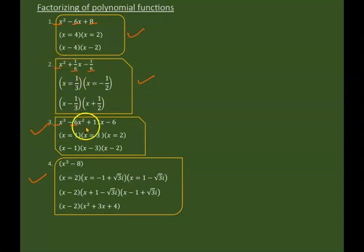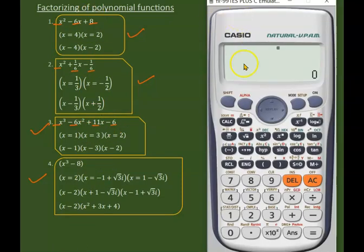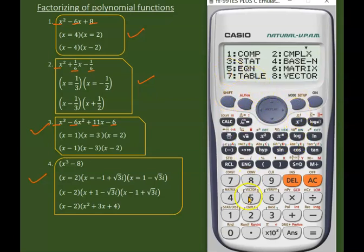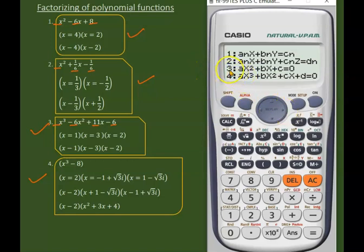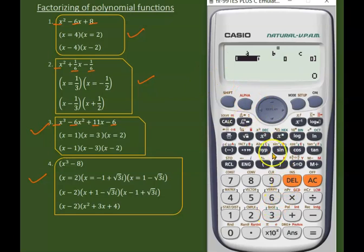We need to go to the mode for equation. The degree of this polynomial is two, so we will use the quadratic equation formula. The a value before x² is one, enter, then negative six, enter, then eight.